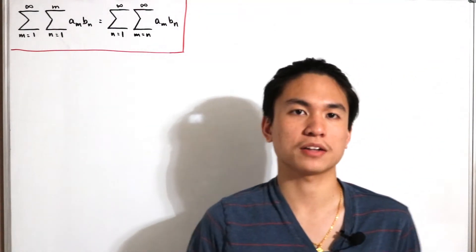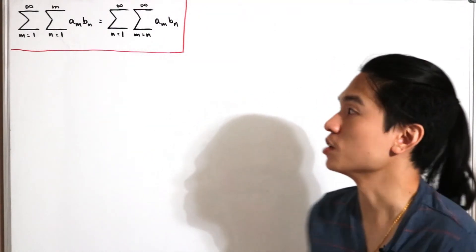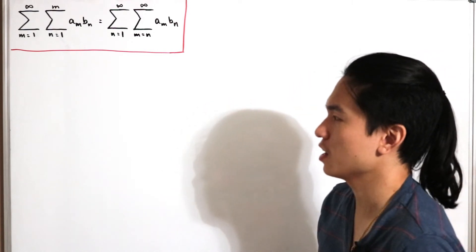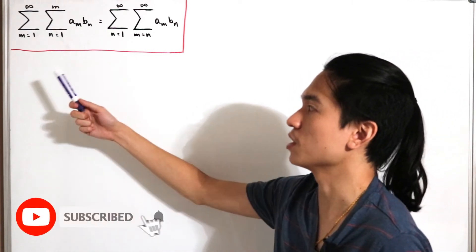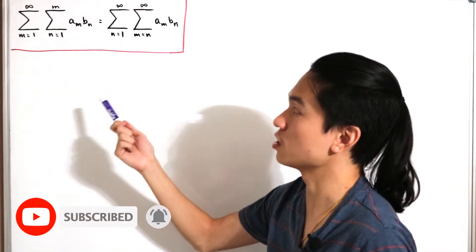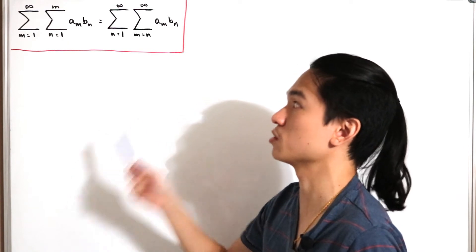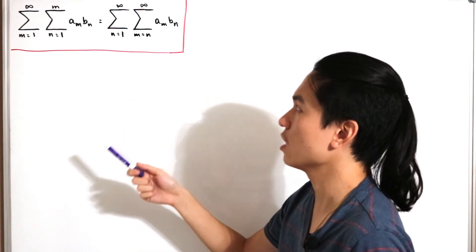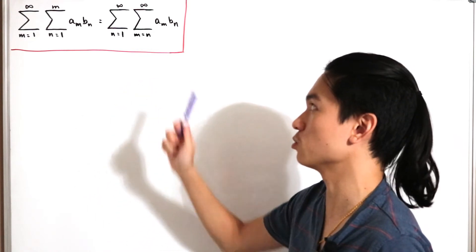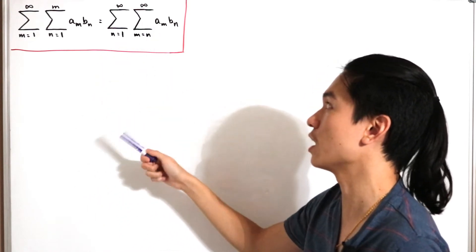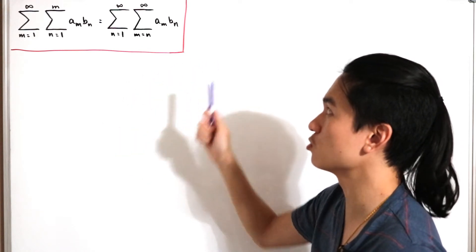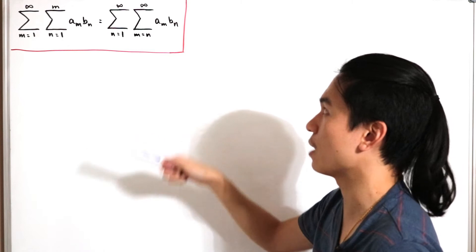Okay, so welcome back to another video. In today's video, we have the following double sum identity, and that says that the sum, the infinite sum from m equals 1 to infinity, and the partial sum starting at n equals 1 to m of a sub n, b sub n, is equal to the infinite double sum n equals 1 to infinity, and then the infinite sum m equals n to infinity of a sub n, b sub n.